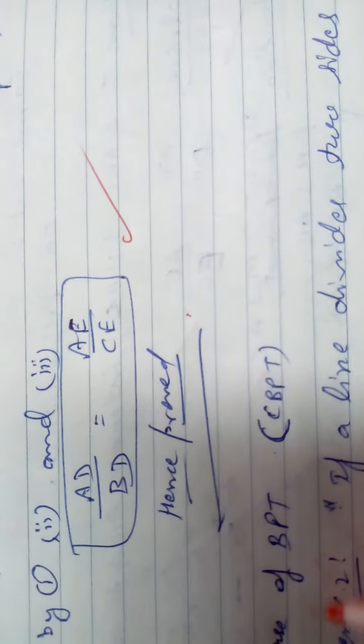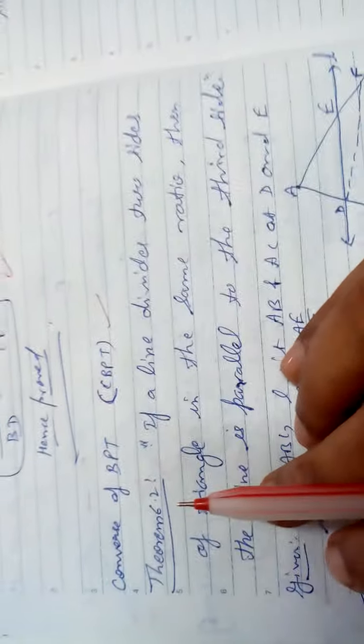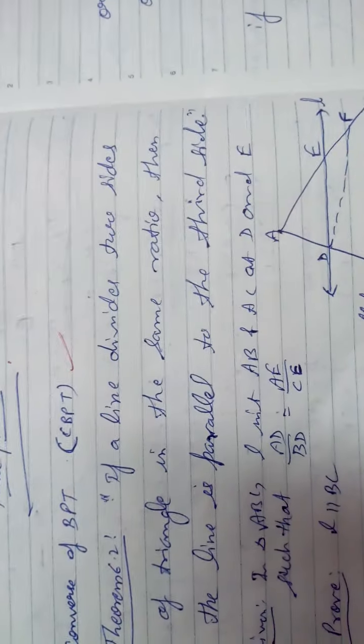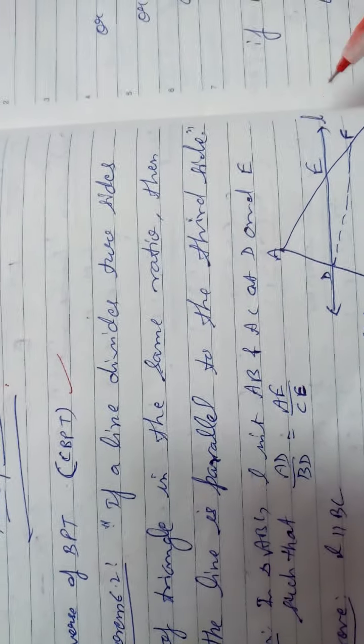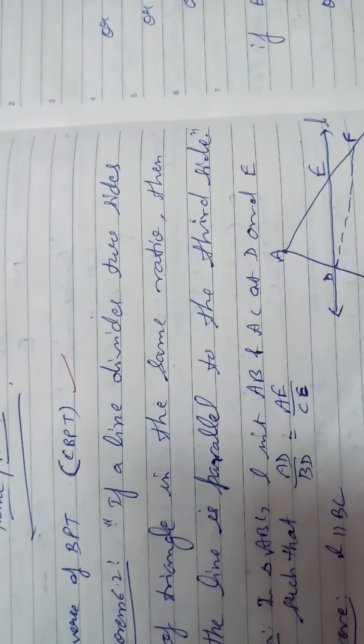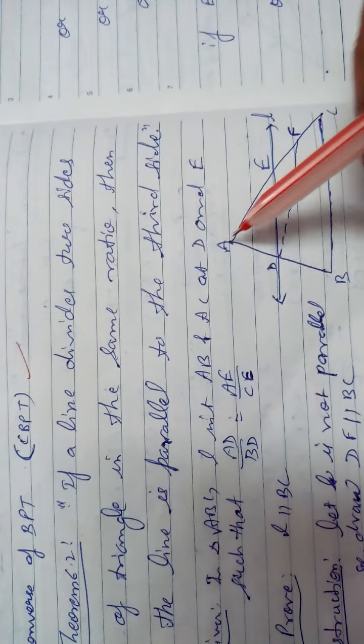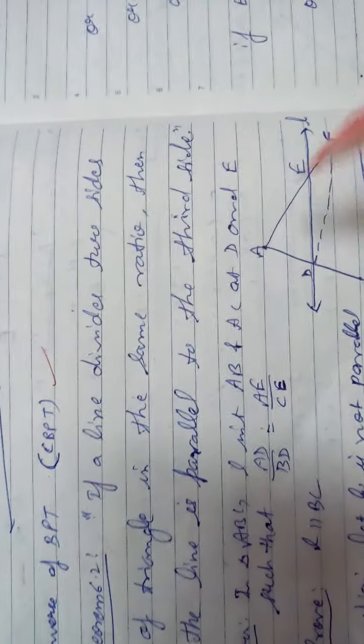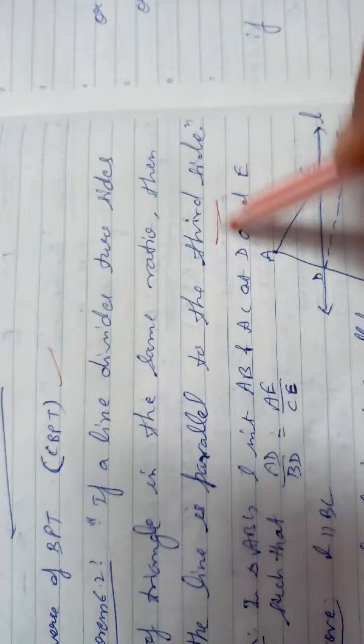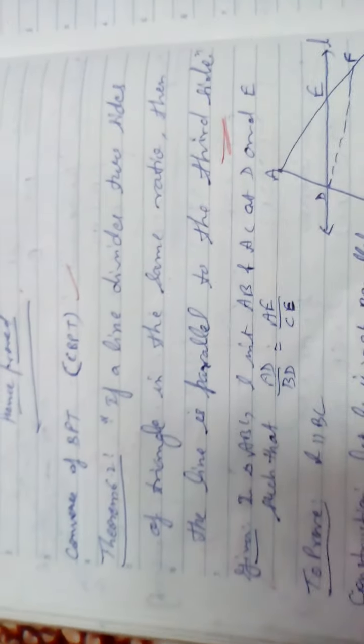Now one more theorem: Theorem 6.2, the Converse of BPT, or CBPT — Converse of Basic Proportionality Theorem. If a line divides two sides of a triangle proportionally — that is, a line L divides AB and AC such that AD/BD equals AE/EC — then this line is parallel to the third side BC.